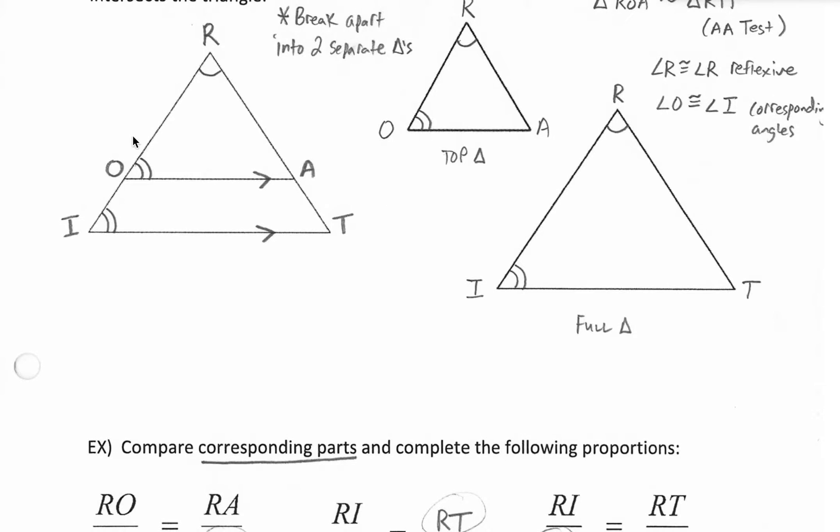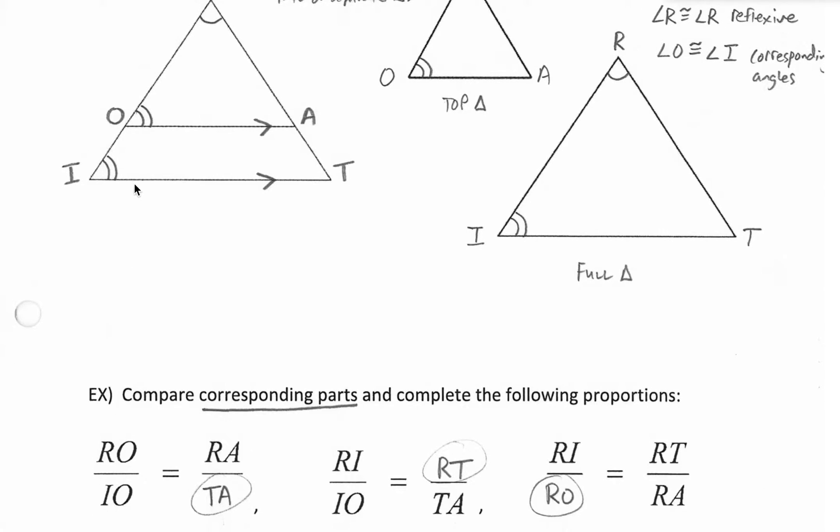When we talk about proportional parts in this diagram here's what we're looking at. We're saying that, for example, RO is the top left piece of the triangle. If we compare that to the bottom left piece, IO, then we just compare the top left to the bottom left.